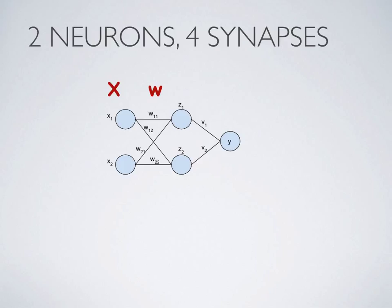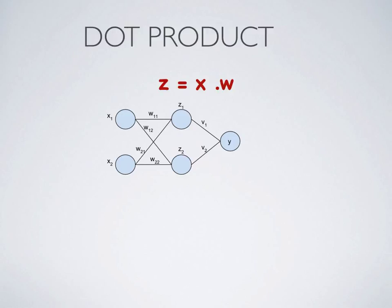So applying the same principle on a neural network, let's assume that there are two neurons in the input layer, x1 and x2, with synapses connecting to the hidden layer. Every neuron is connected to every other neuron. So there are four synapses. So we can reduce it into a matrix dot product problem. We can get the second layer, z, by multiplying the matrix x to matrix w.